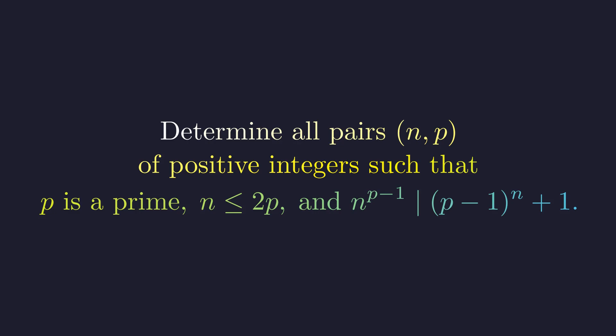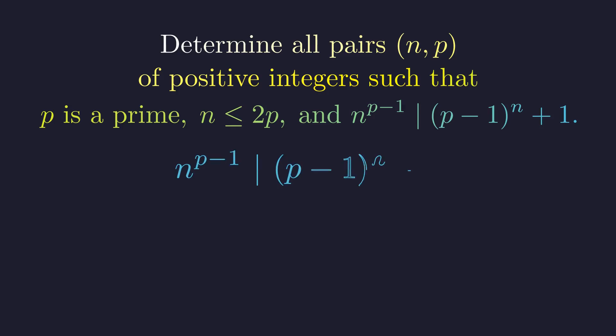Third, the expression (p-1)^n + 1 must be divisible by n^(p-1). This is the central divisibility condition. Our analysis will revolve around its consequences.